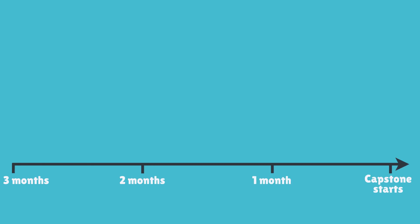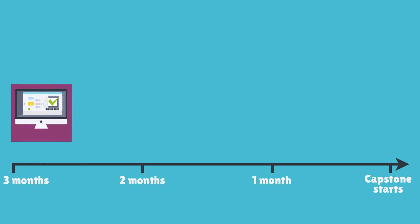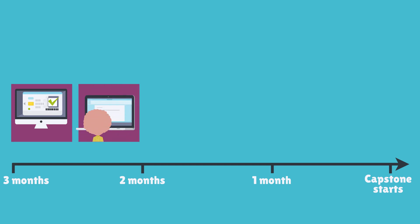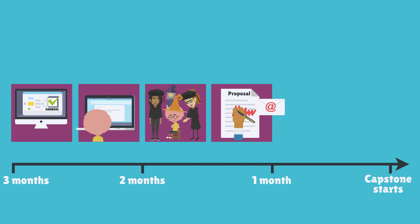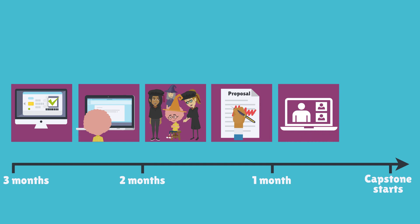So where to from here? Once we see that you are eligible for entry into the Capstone, we will email you a topic approval form to complete approximately three months prior to the start of each Capstone offering. We then assign you to a project and a university supervisor based on your preferences, and will email you introducing you to your university supervisor, who will provide any feedback on your proposed project.